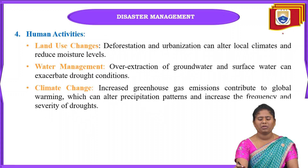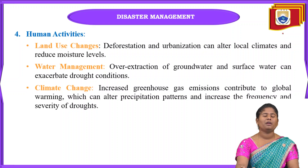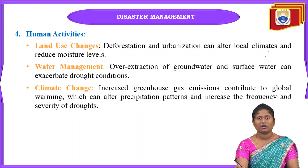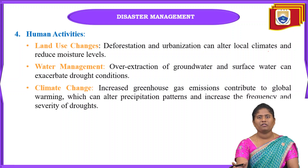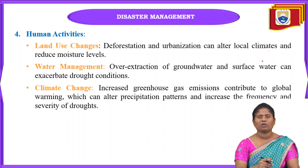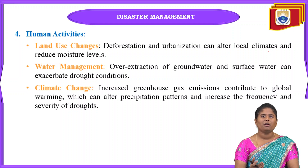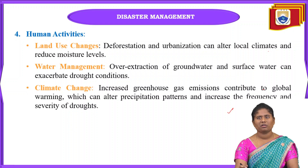The next cause is human activities. Due to land use changes — specifically deforestation and urbanization — there is a significant change in climatic conditions that leads to a reduction in moisture levels. Water management is also a factor: if too much groundwater is extracted, there will be no surface flow, and reduced surface flow can cause drought conditions.